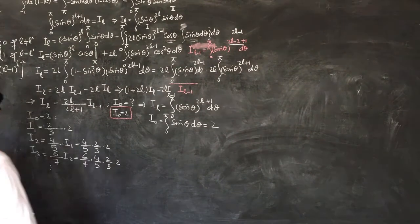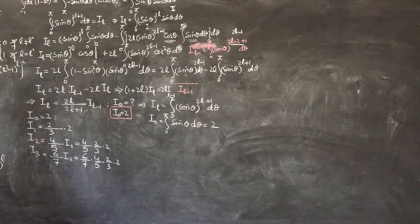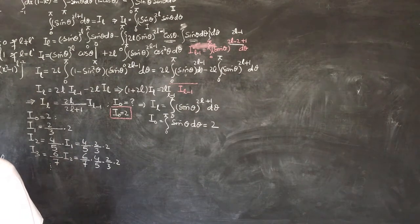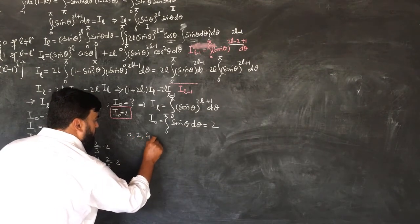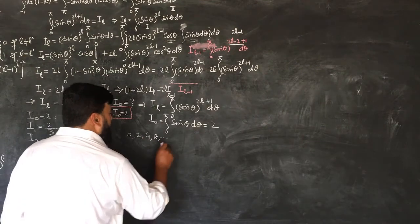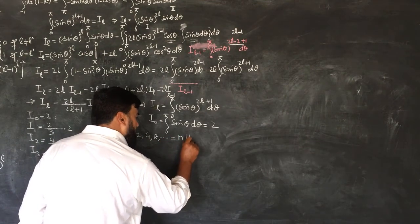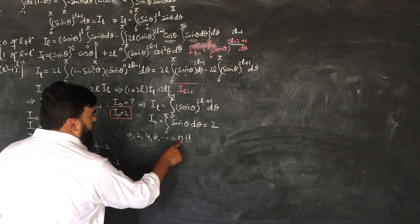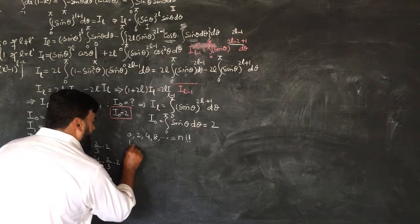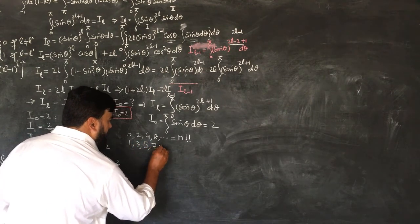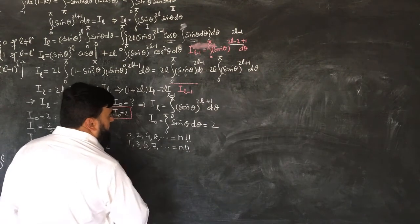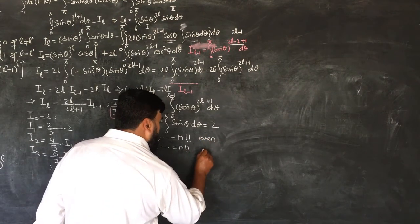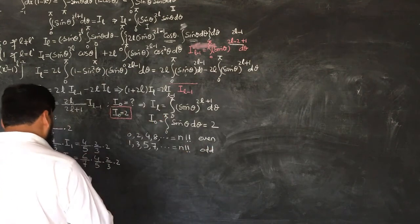Now, looking at these expressions, they resemble double factorials. When we have 2, 4, 6, 8 and so on, this can be written as N double factorial where N is even. When we have 1, 3, 5, 7 and so on, this is also N double factorial but where N is odd.